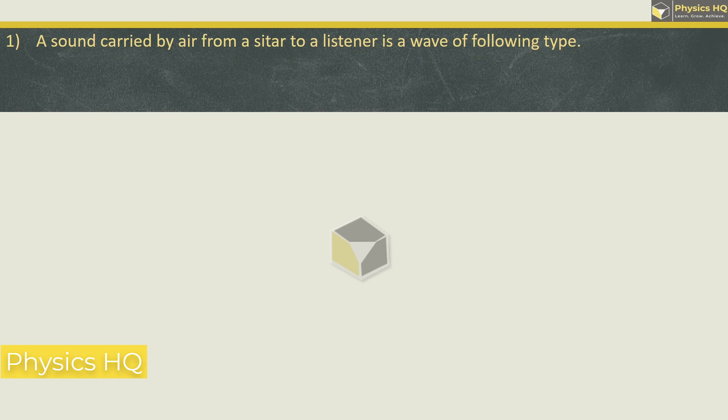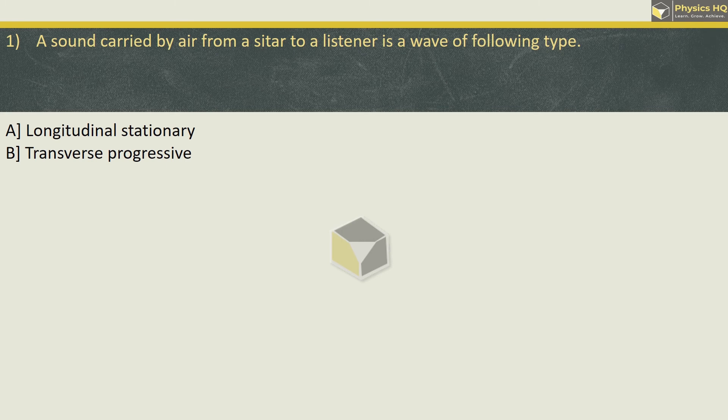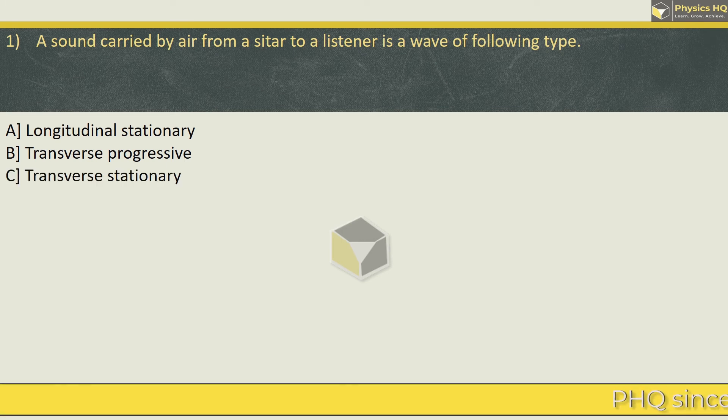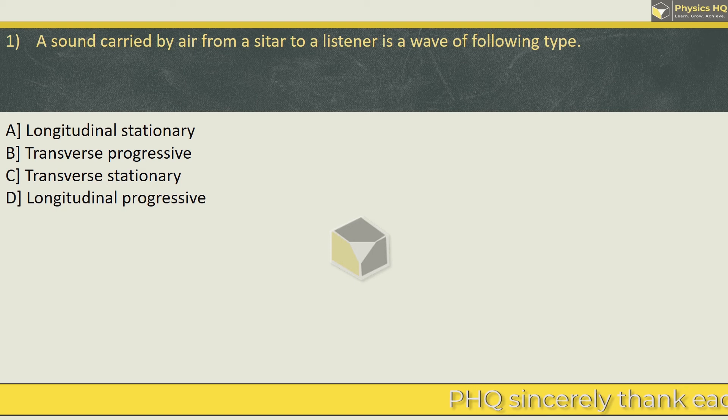A sound carried by air from a sitar to a listener is a wave of following type: Longitudinal Stationary, Transverse Progressive, Transverse Stationary, and Longitudinal Progressive.